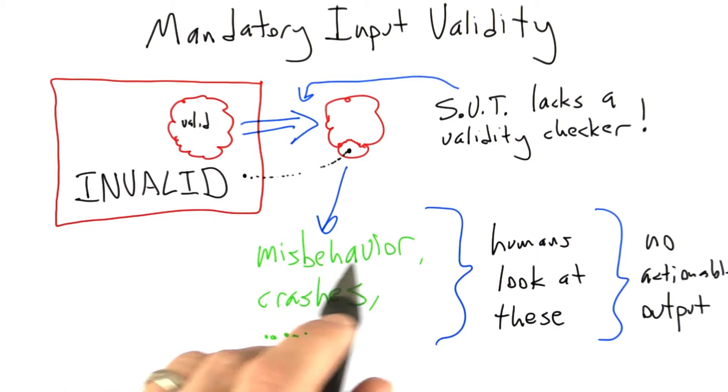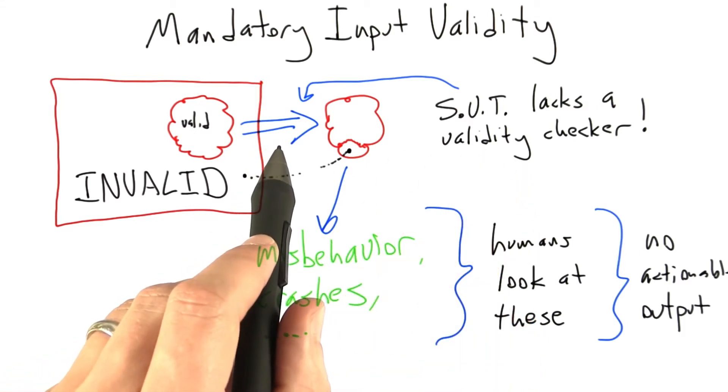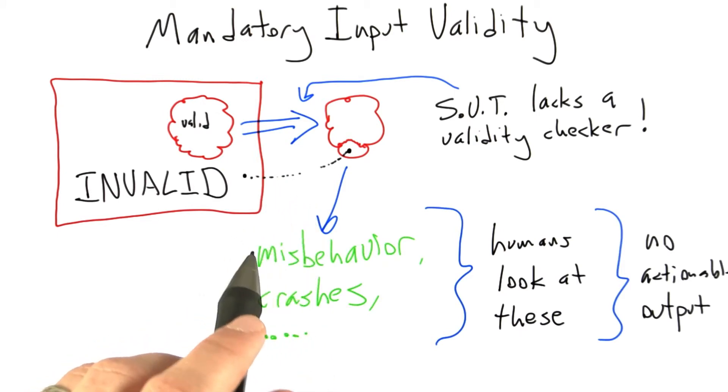Let's talk a little bit about why software under test would lack a validity checker. As we saw in Unit 1, internal interfaces, that is to say interfaces within a product, and interfaces that don't span trust boundaries, often lack full validity checking.